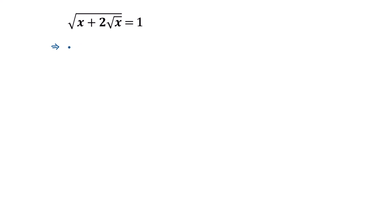The square root and this square will cancel out, so it will be x plus 2 times square root of x is equal to 1 squared, which is 1.